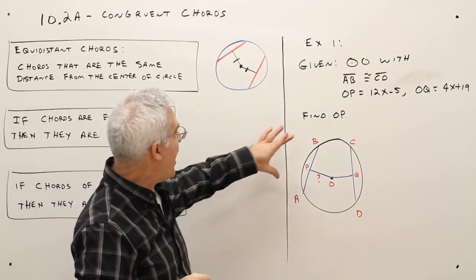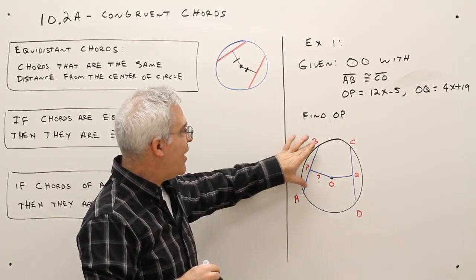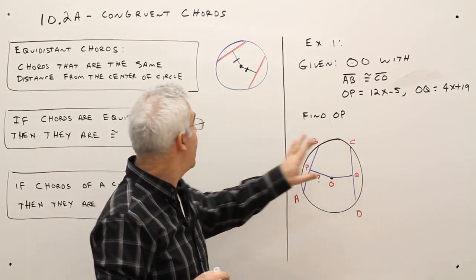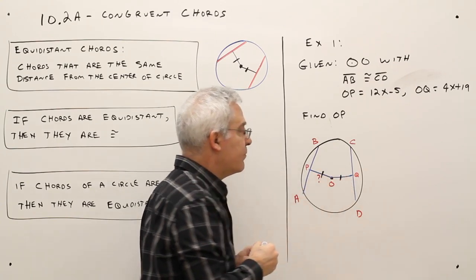with AB congruent to CD. Well if AB is congruent to CD, that means that these things, these chords, are equidistant. Okay,